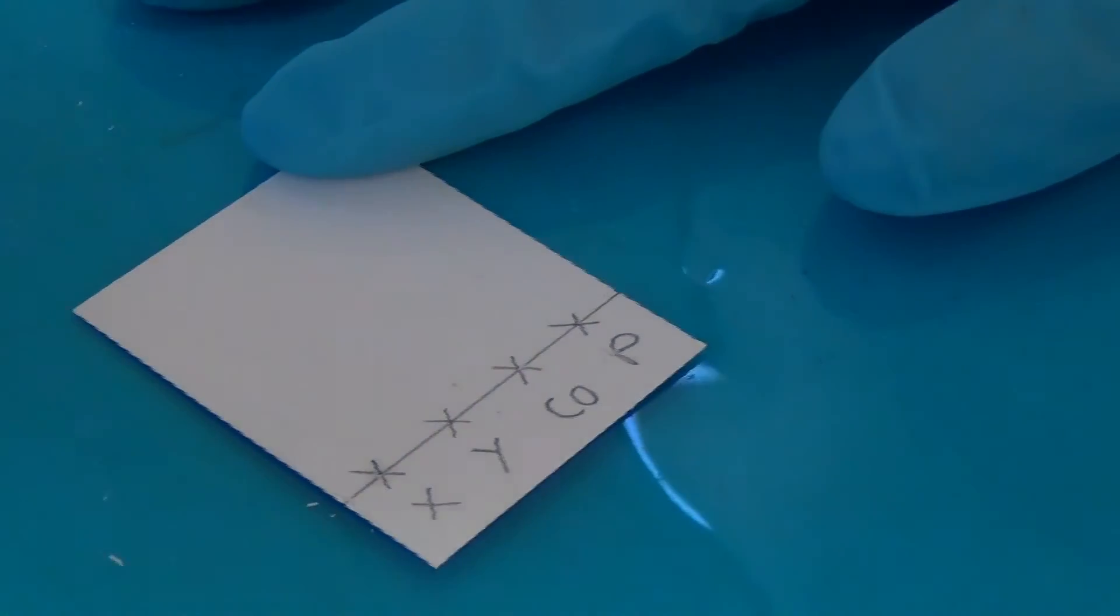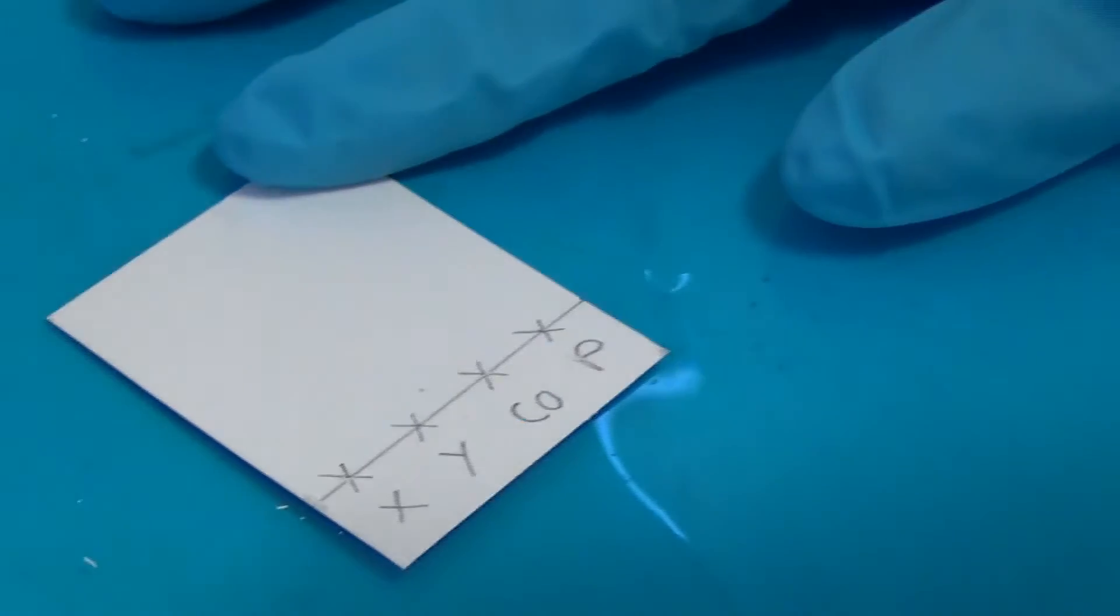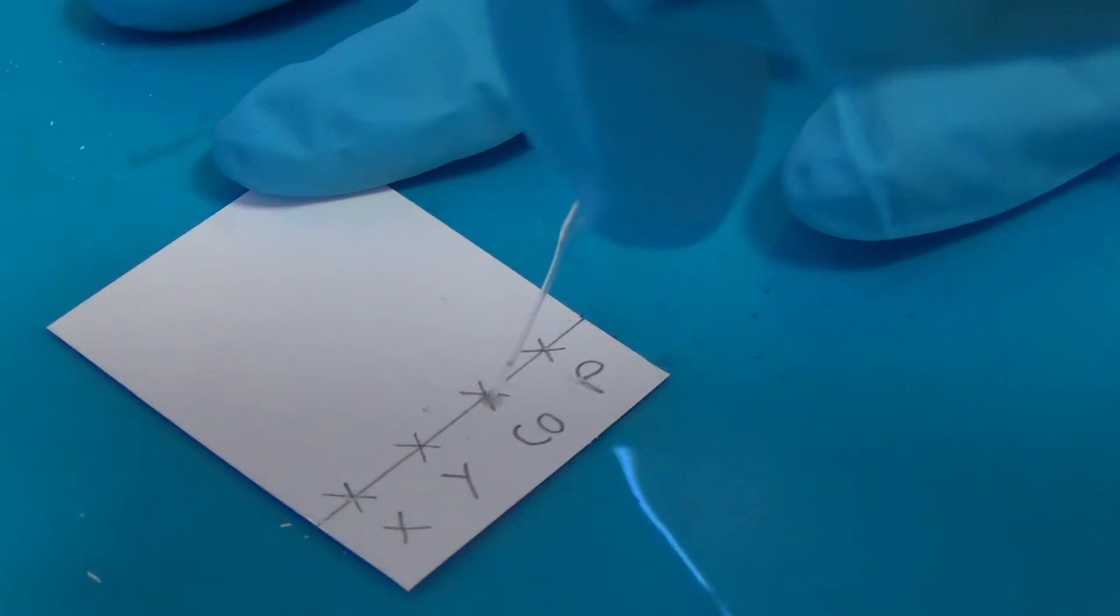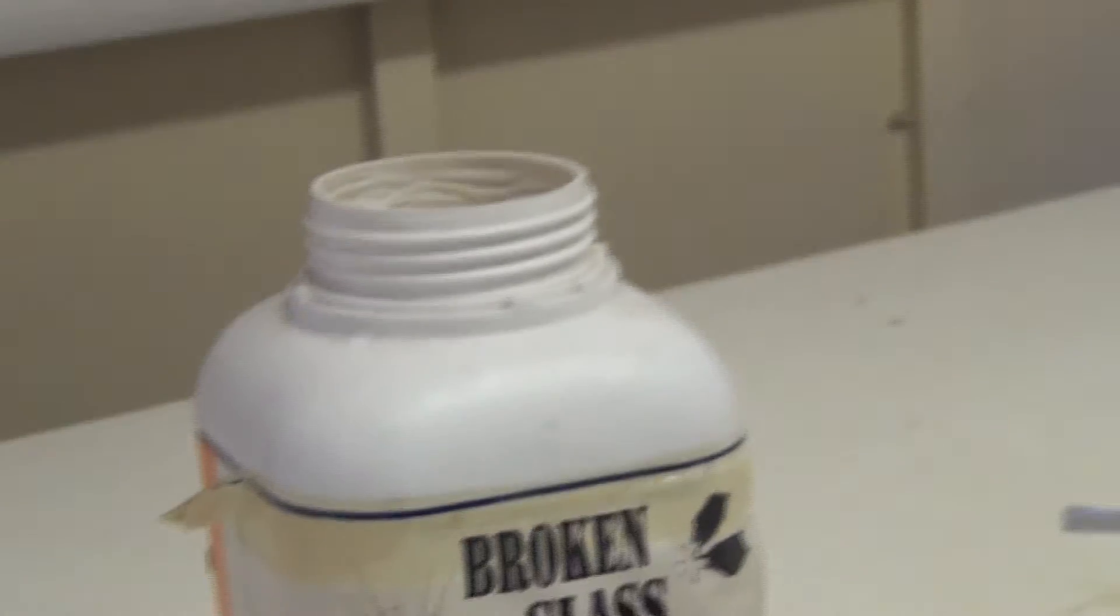This is the co-spot where you will spot all three samples on top of each other, and the results of the co-spot will act as a useful reference when analysing the plate. When finished with the capillary tube, make sure to dispose of it in a suitable place.